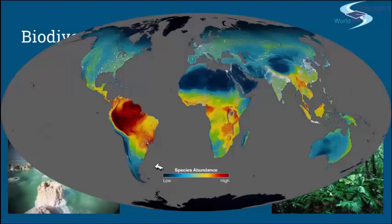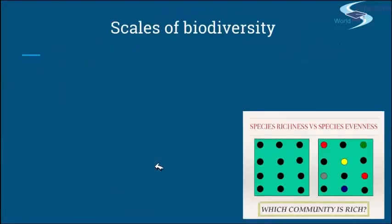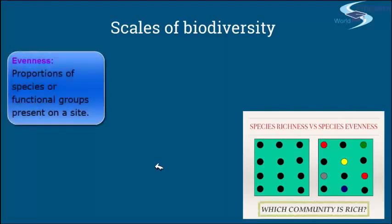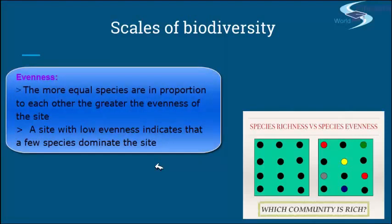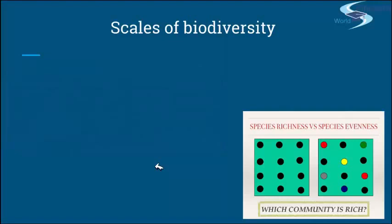This is something we will talk about in a future presentation. Now I would like to introduce you to more characteristics of biodiversity. Next to the already mentioned species richness, one more important characteristic is so-called evenness — the proportions of species or functional groups present on a site. The more equal species are in proportion to each other, the greater the evenness on the site. A site with low evenness indicates that a few species dominate the site.